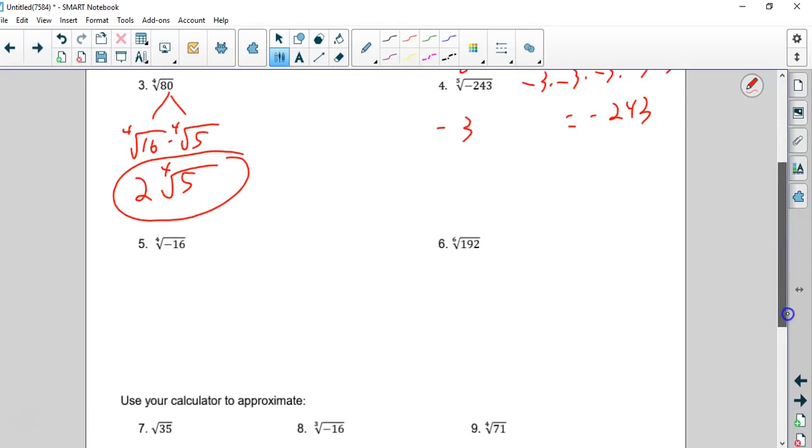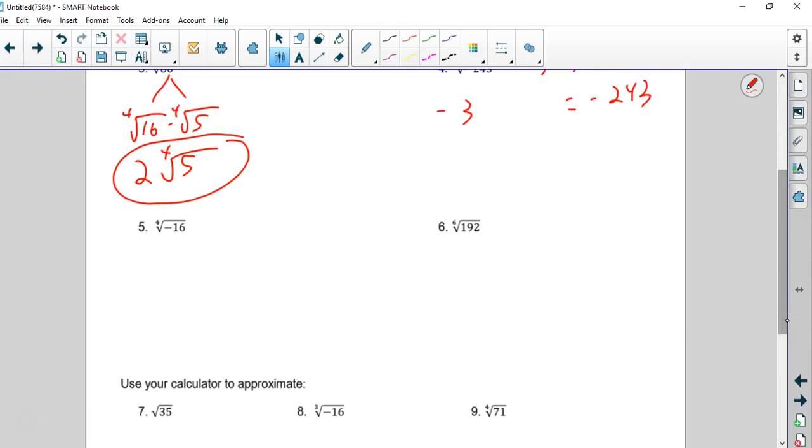Number five. The fourth root of negative 16. No solution. It is imaginary. And the reason is, this is even and that's negative. And you can't take an even root of a negative number. You just can't do it yet. You'll learn how to do it, but you can't do it yet.